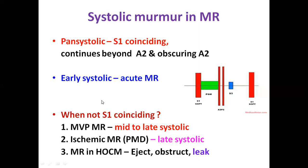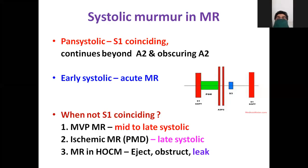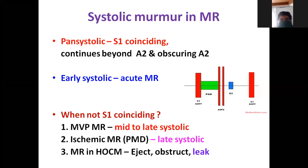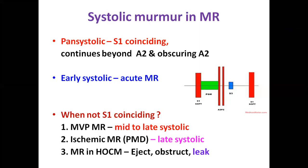When the MR murmur is not S1-coinciding: in MVP with moderate MR there will be a click either mid or late systole with a late systolic murmur depending on the severity of prolapse. In ischemic MR like papillary muscle dysfunction or acute ischemia it is late systolic. In HOCM — remember eject, obstruct, leak — there is rapid ejection initially, then obstruction due to SAM causing systolic anterior motion, then leak. So it occurs in the later part of systole and is not S1-coinciding.